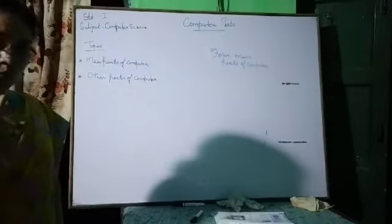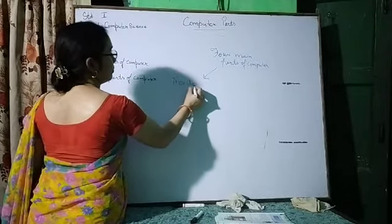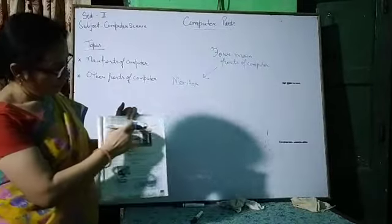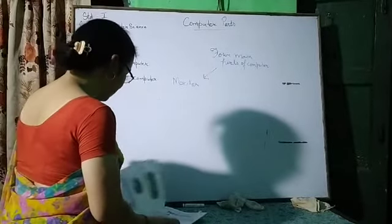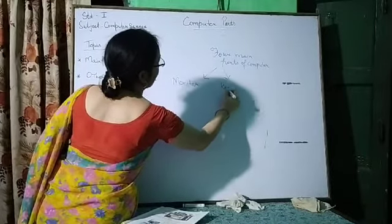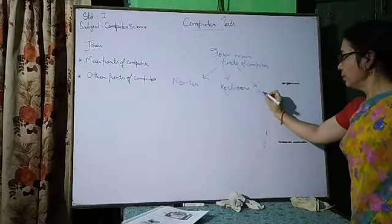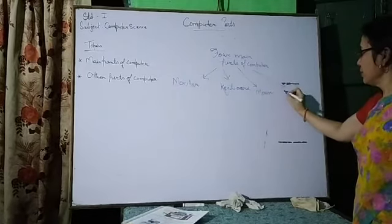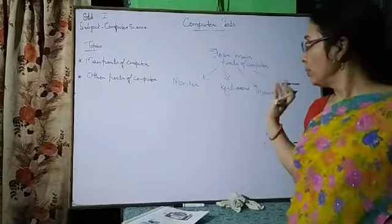What are those 4 main parts? Number one is monitor — where you see pictures. Monitor picture is given. Then the second one is keyboard. Next is mouse. And the fourth one is CPU. These are the 4 main parts of computer.